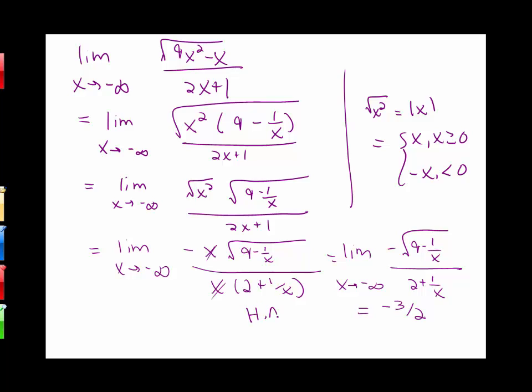This tells us there is also a horizontal asymptote at y equals negative 3/2.